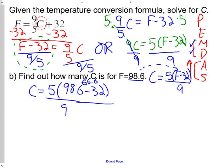We get 66.6 here times 5, 333 divided by 9. And this gives us exactly 37. And again, because we're talking Celsius, this is what C equals. So 37 degrees is our body temperature in Celsius.